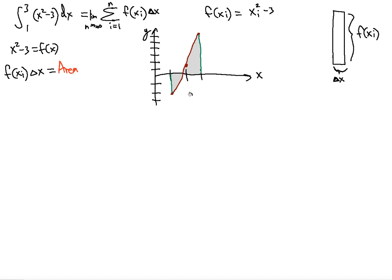If we divide this into rectangles, and so on, these rectangles must be of equal width. The Δx is going to be the width of each rectangle. Since all rectangles must have the same width, we take the upper limit minus the lower limit — we started at x equal to 1 and end at x equal to 3 — and divide this difference by n. So Δx equals 2 divided by n.